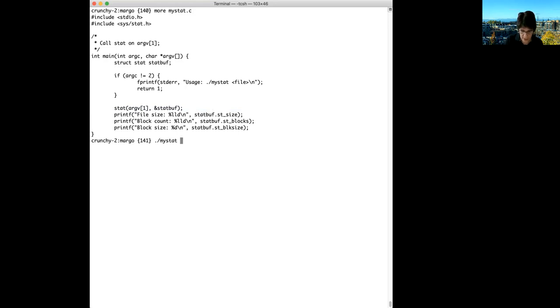Notice I'm running this on my Mac. You might get slightly different numbers if you run this on your laptop or on the student machines. Let's run my stat on tiny. The file size is one byte, as we saw. When we did ls, it said there were four blocks, and that's because LS was reporting in one kilobyte units.